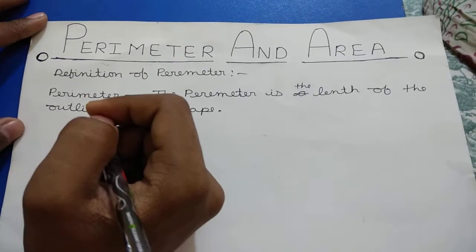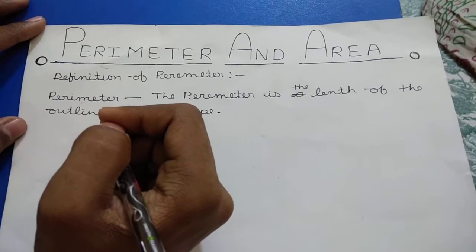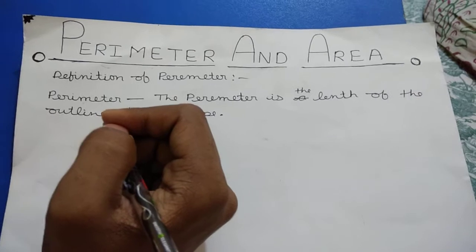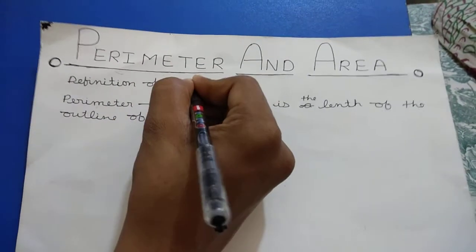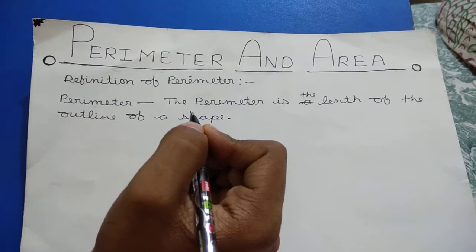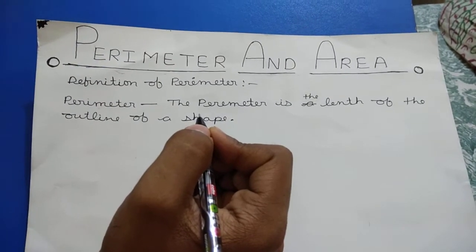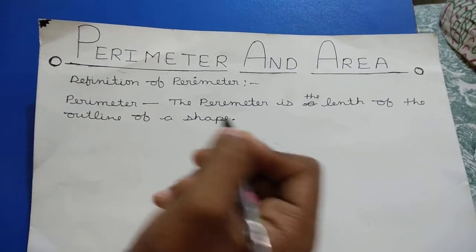Hello guys, we will read here perimeter and area. First we know the definition of perimeter. What is perimeter? The perimeter is the length of the outline of a shape.